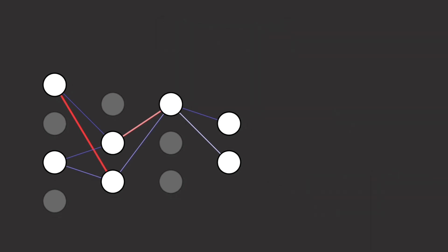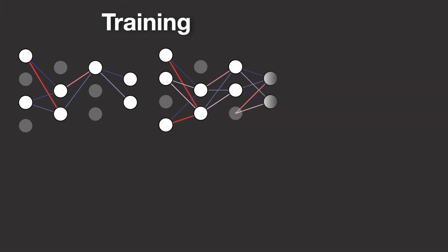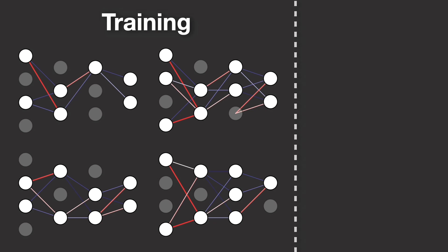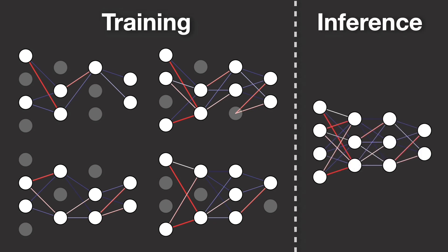In essence, dropout trains a collection of many different smaller subnetworks that share weights. Then, when it comes to testing the model, you use the full network and deactivate the dropout mechanism.